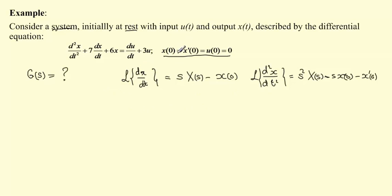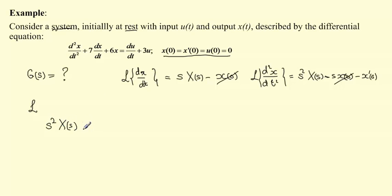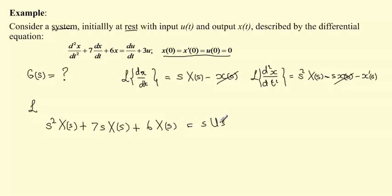Now, since the initial values are all zero, these values would all be zero. Similarly for u(t), u(t) at zero will be zero. So applying the Laplace transform to the equation, what we get is: s² X(s) + 7s X(s) + 6 X(s) = s U(s) + 3 U(s).